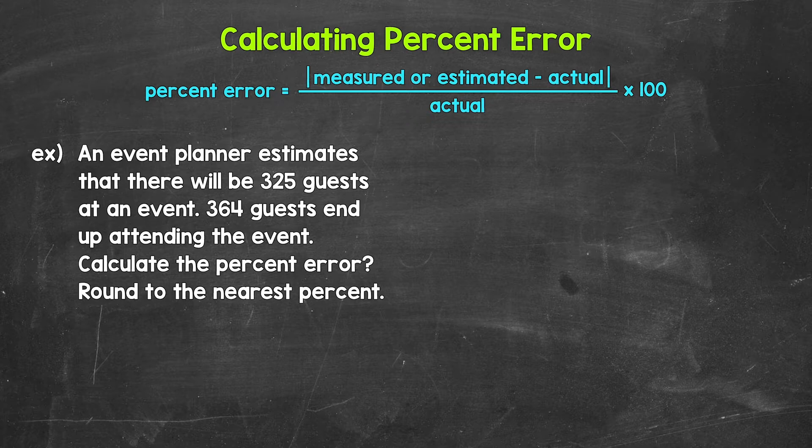Now to calculate percent error, we take the measured value or estimated value and subtract the actual value. Then we take the absolute value of that result. So if it's negative, it will turn positive. Then we divide that by the actual value. This will give us a decimal. We then multiply the decimal by 100 to convert it to a percent.